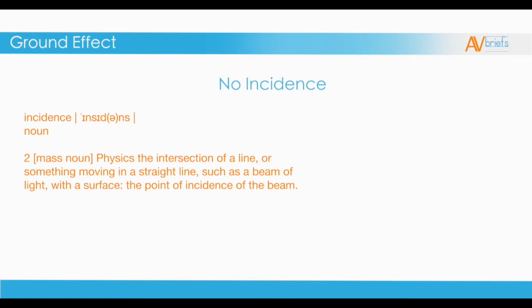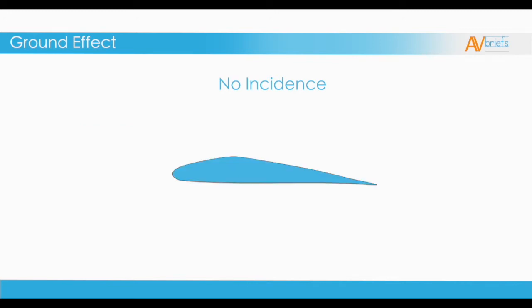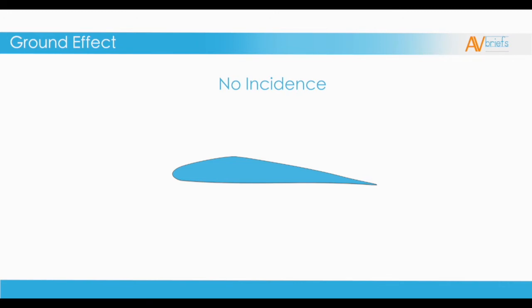In physics, incidence is the intersection of a line, or something moving in a straight line such as a beam of light, with a surface. The point of incidence of the beam is the beam of light in relation to the ground or other surface. So if something has no incidence, it has no angle between the direction of travel and the surface. A wing, for example, has no incidence when it is level with the surface it is flying over. Such a wing would produce so little lift as to be not useful. Therefore, engineers give the wing an angle of incidence, which is an angle of attack even in level flight.